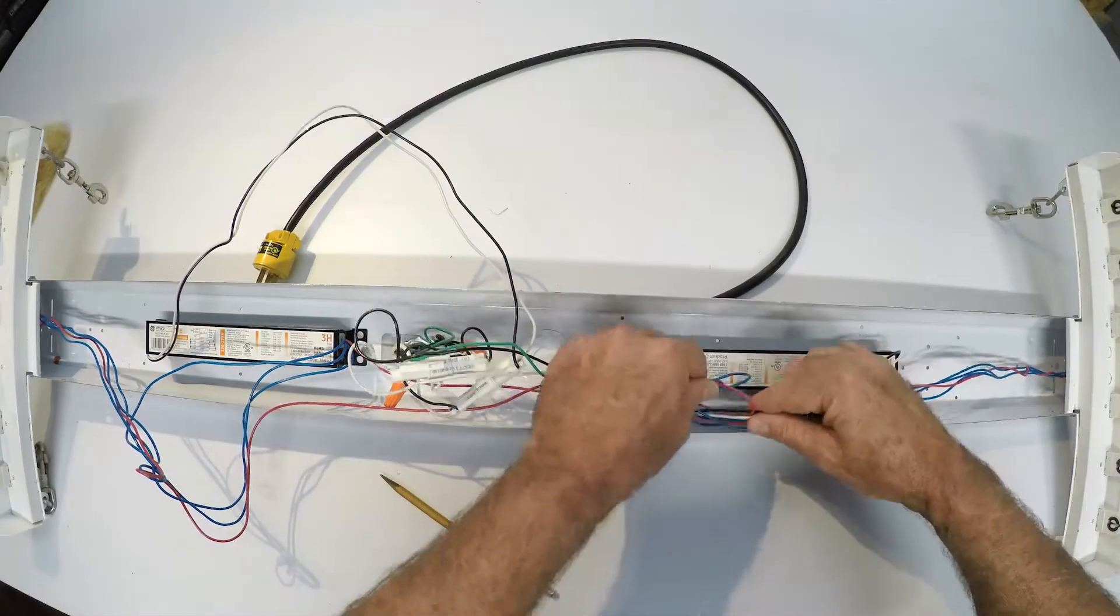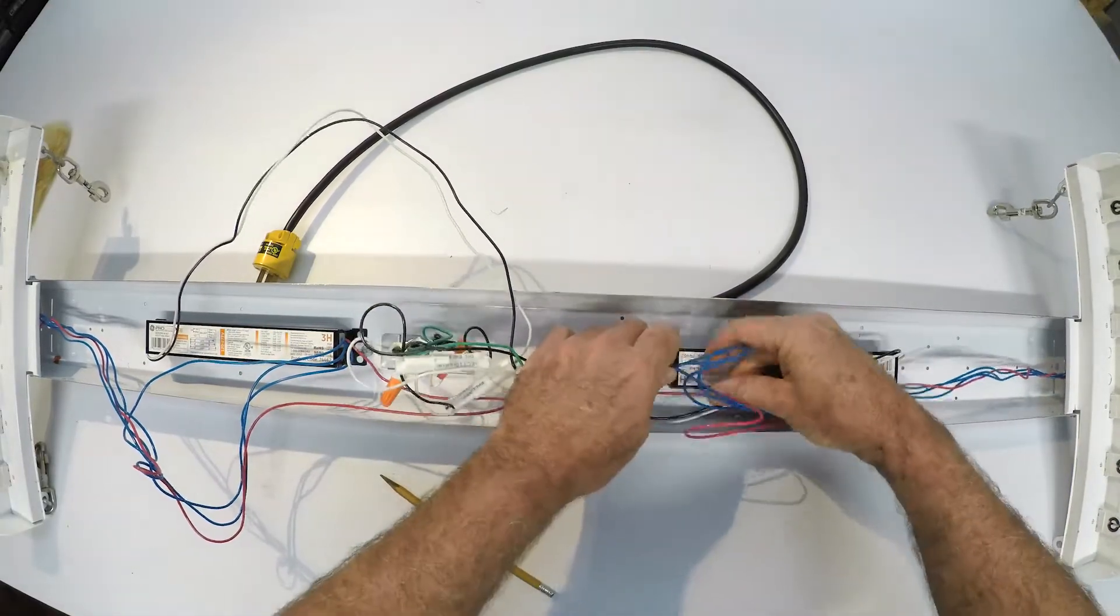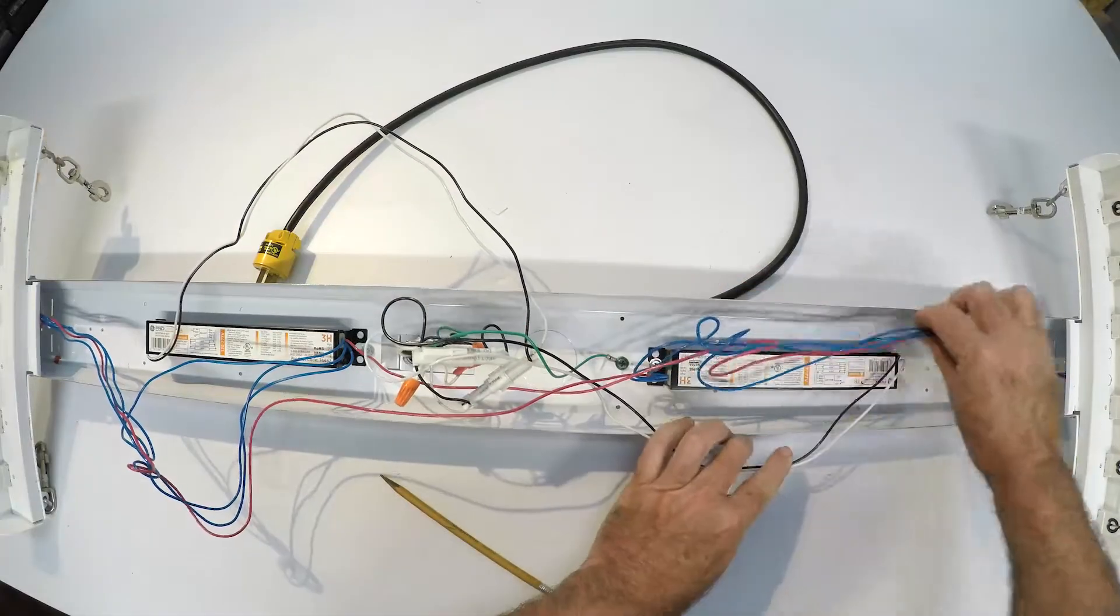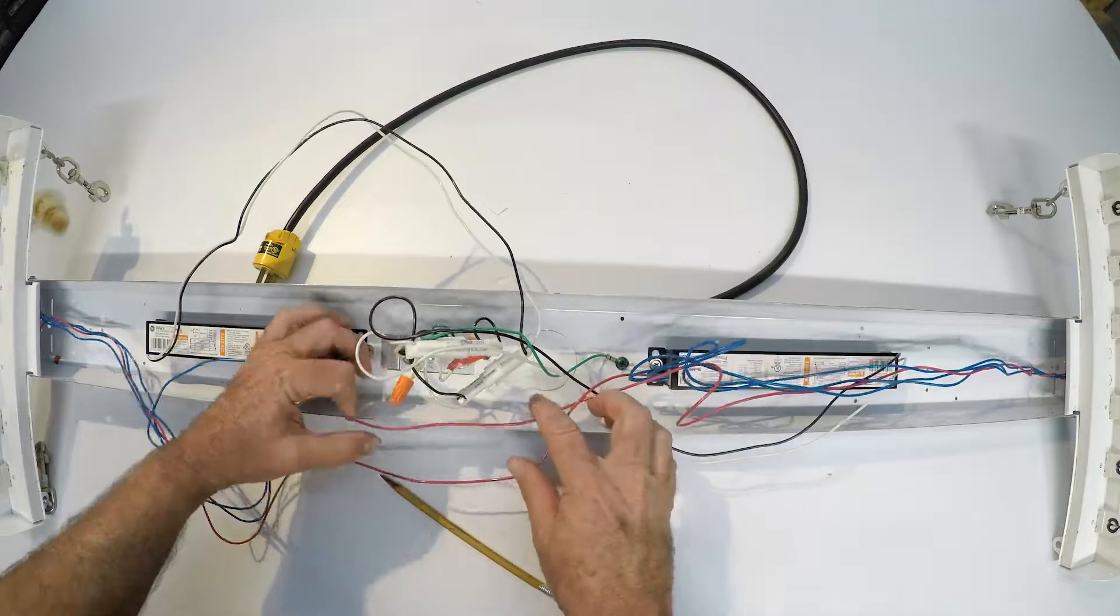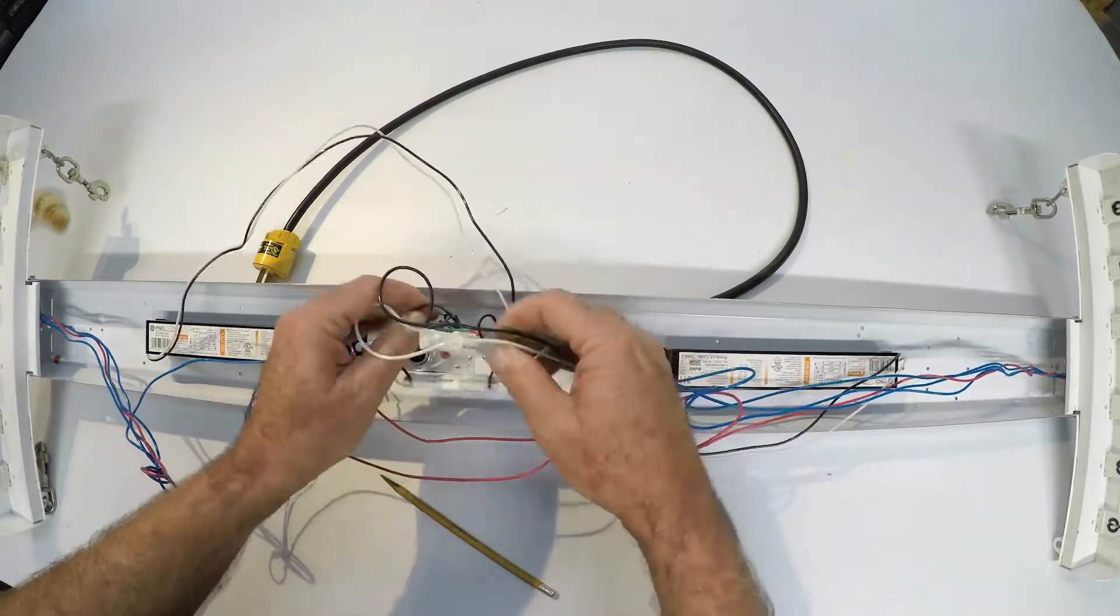Here's the hot neutral coming down here to this ballast. You can see the red and blue wires going down to the socket and then here in the middle, let's pull some of this back and see if we can sort this out.